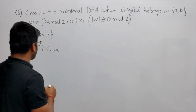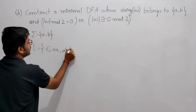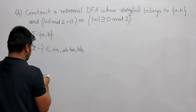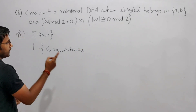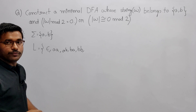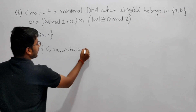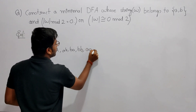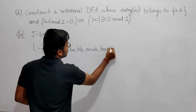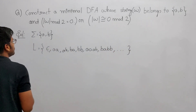Strings like AA, AB, BB, BA belong to this language because their length is 2, and when you divide by 2 you get remainder 0. Similarly, strings like AAAA, AABB, BABA, ABAB belong to this language. These are the types of strings that belong to this language.